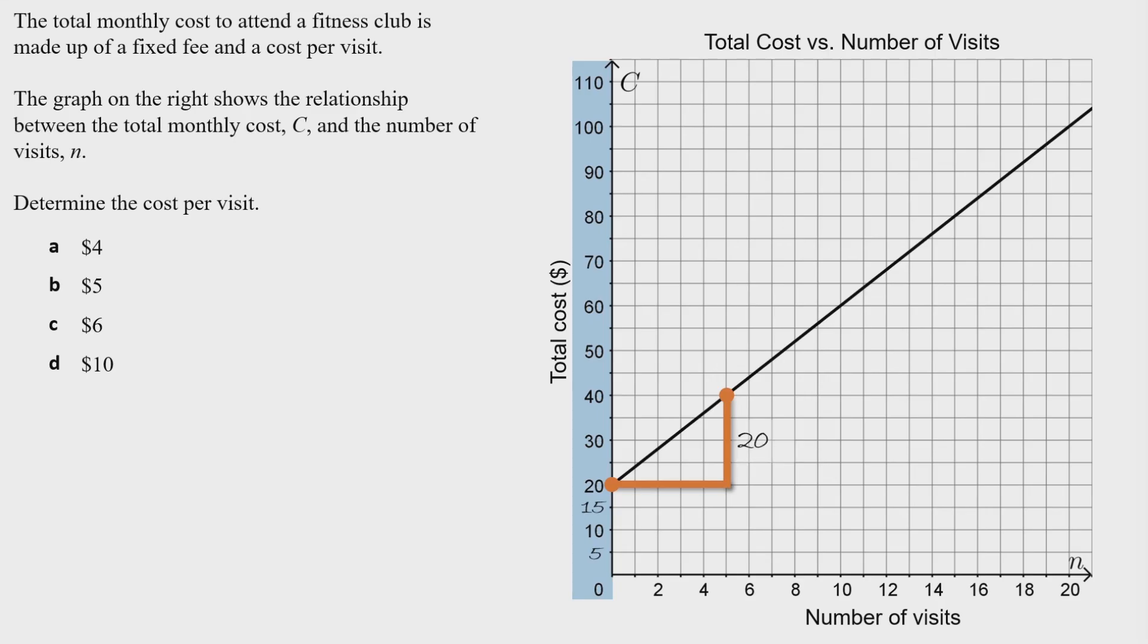There are other ways to get this number. For example, this point is 40 high and this one was 20 high, so the difference is 20. That works fine too.